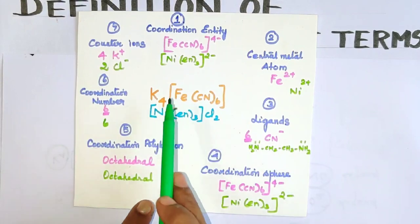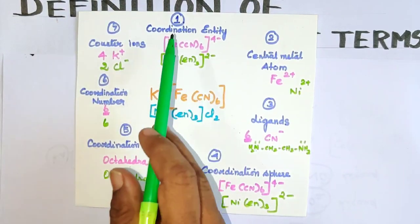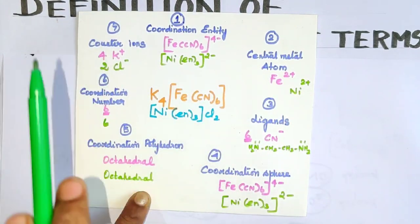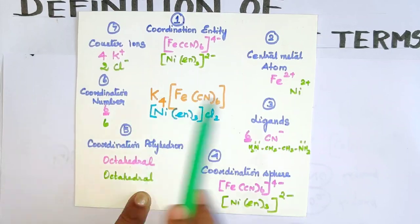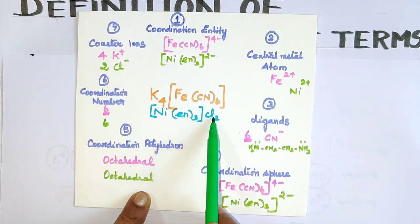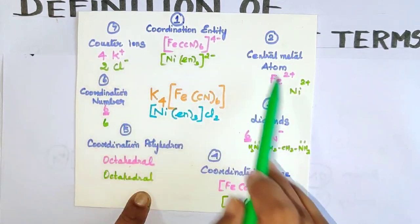Potassium ferricyanide is a different color question. [Ni(en)3]Cl2 is a separate complex. The answer involves the green color complex.